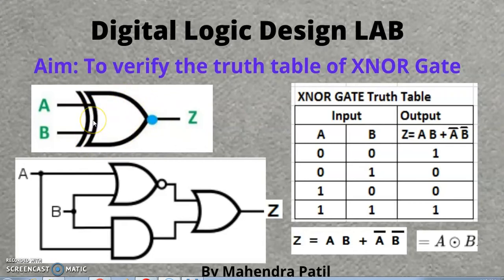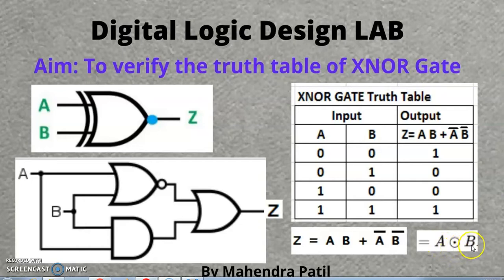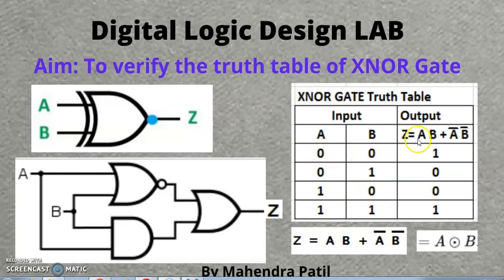The equation for the XNOR gate is: Z equals A·B plus A-complement·B-complement. It is also represented as A XNOR B. This is the circuit we can use to obtain this equation. We will test it on our truth table. For the truth table there are four possibilities of input: zero-zero, zero-one, one-zero, and one-one. We just put these values into the output equation.